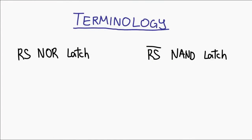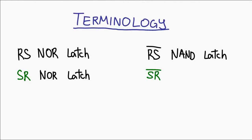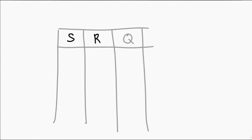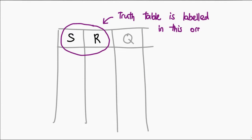There is also one additional thing I need to clarify. Throughout this series, I have been saying RS NOR Latch and RS NAN Latch. Please note that the alternate names SR NOR Latch and SR NAN Latch are also valid. I haven't found any sources that show one is preferred over the other. The one I used is consistent with what I've heard the most. If you prefer, you could always say SR instead, since after all, that's the order in which the truth table entries are written.